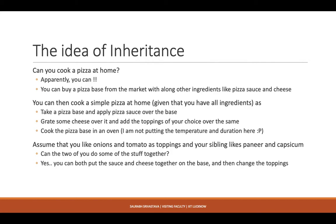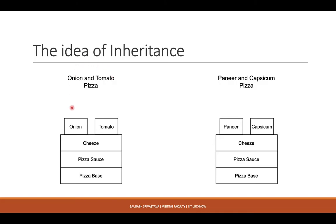Now assume there are two people in your house — you and your sibling — who like different toppings. You would like onions and tomatoes while your sibling would like paneer and capsicum. So you're going to make two pizzas, but you can understand that some processes are exactly the same: getting the pizza base, pizza sauce, cheese, applying the sauce over the pizza base, and grating the cheese — up to this point it's basically common. After that, you add your respective toppings and bake them both.